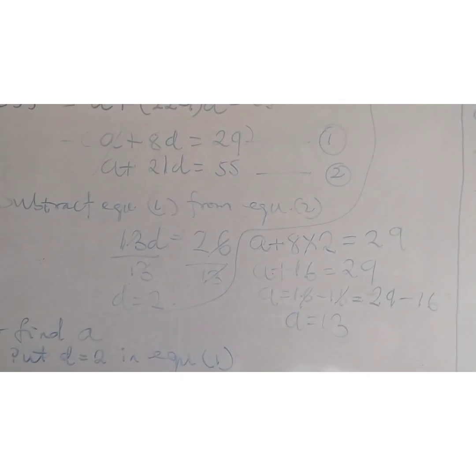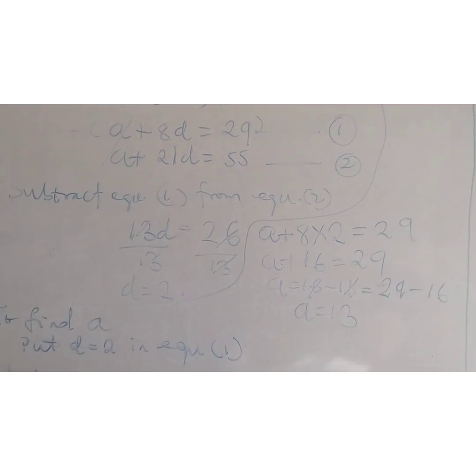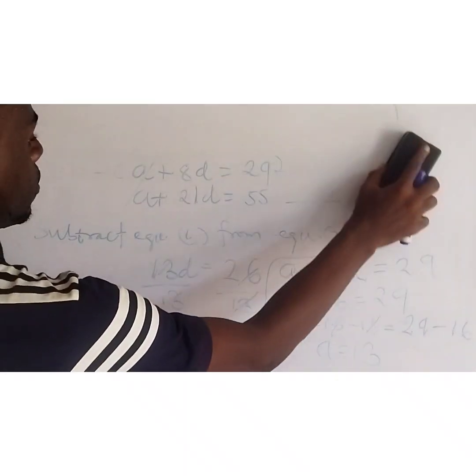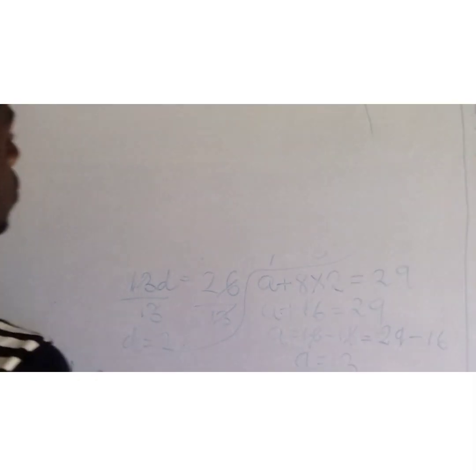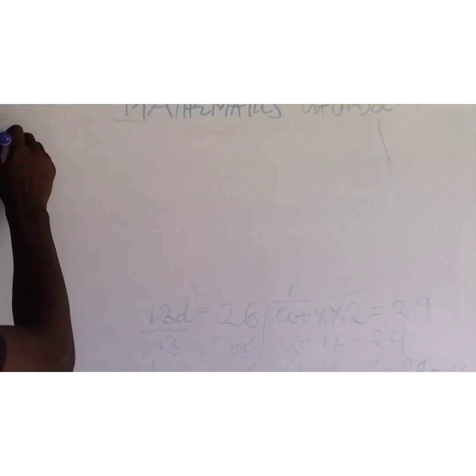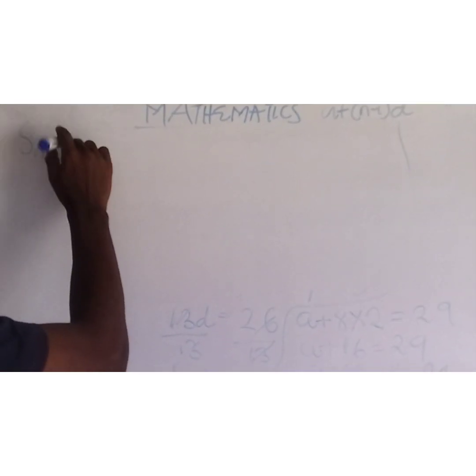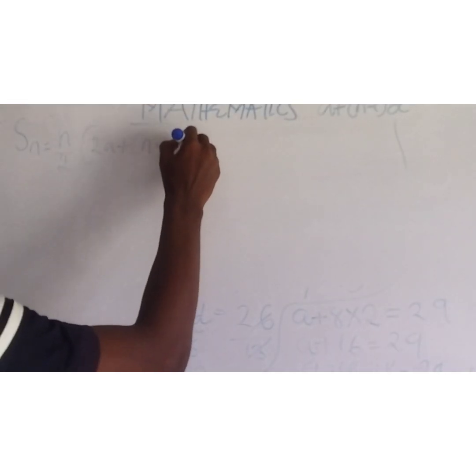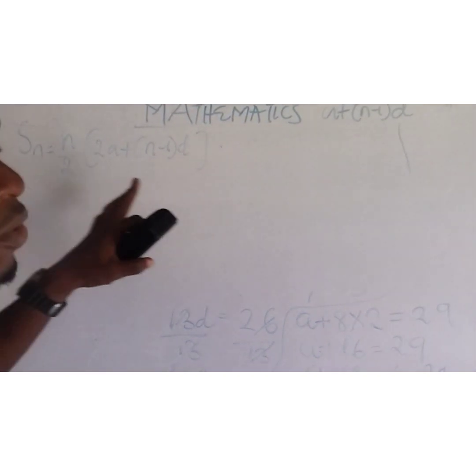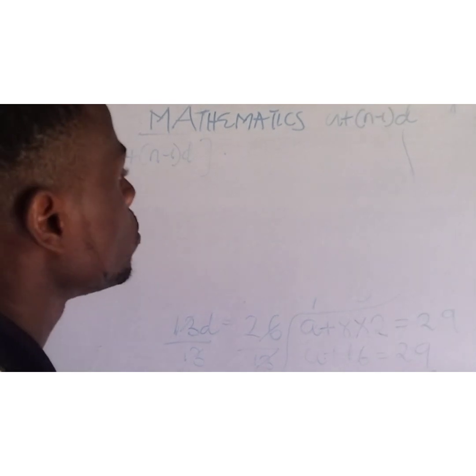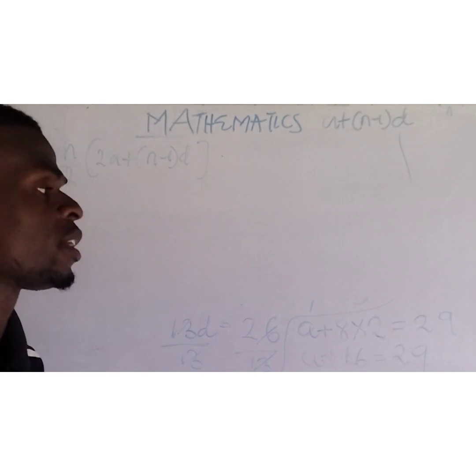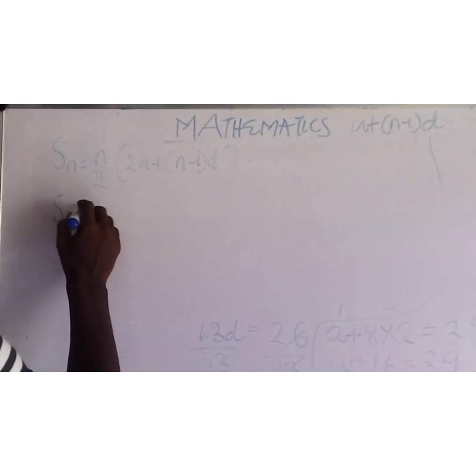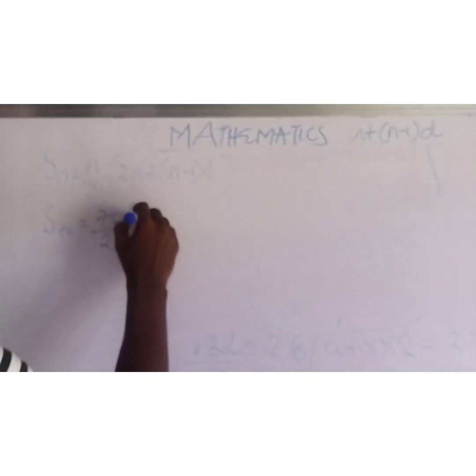Let's now find the sum of the 70th term. Our formula for finding the sum is S equal to N over 2 bracket 2A plus N minus 1 times D. That's the formula for finding our sum of the arithmetic progression.